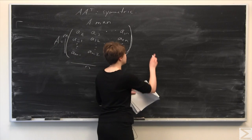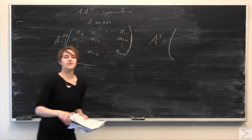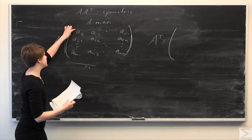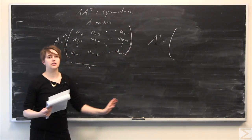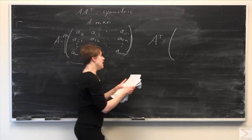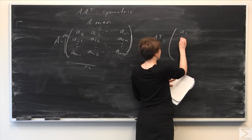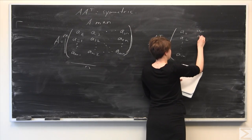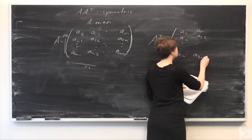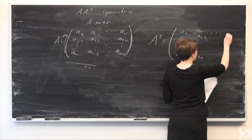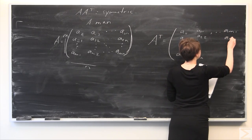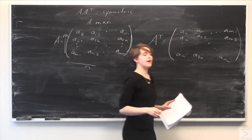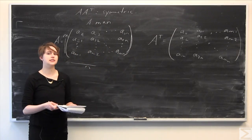Now I'll write out A transpose so it's easier to visualize. When we take A transpose, imagine taking this corner of the matrix and bringing it up and around — flipping the matrix. What we get is: A₁₁, A₁₂ down to A₁ₙ; then A₂₁, A₂₂ down to A₂ₙ; all the way to A_{m1}, A_{m2}, down to A_{mn}. So now we have A and A transpose, and we need to multiply them.